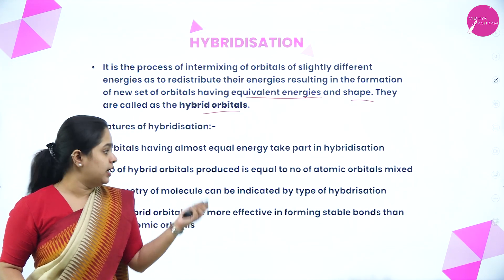Moving on to sp2 hybridization: 1s orbital and 2p orbitals intermix to form 3 equivalent sp2 hybridized orbitals. These 3 orbitals make an angle of 120 degrees with each other and form trigonal planar geometry.